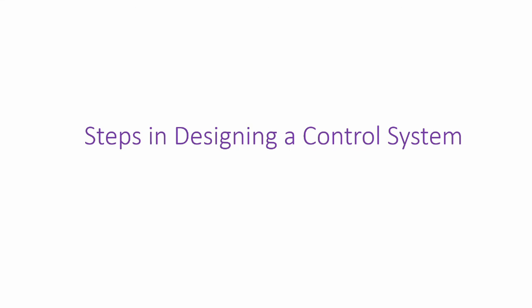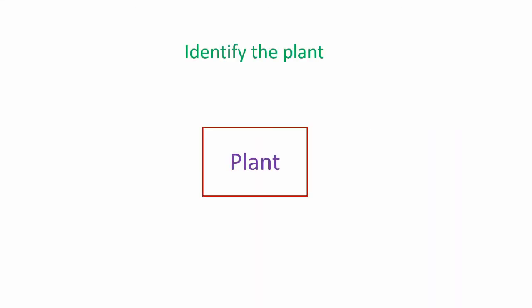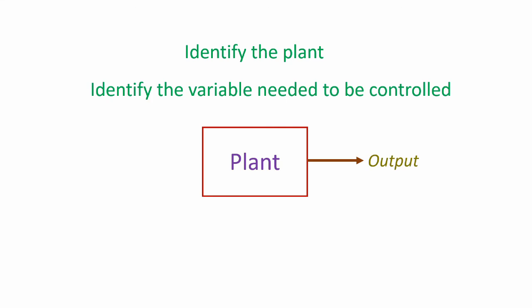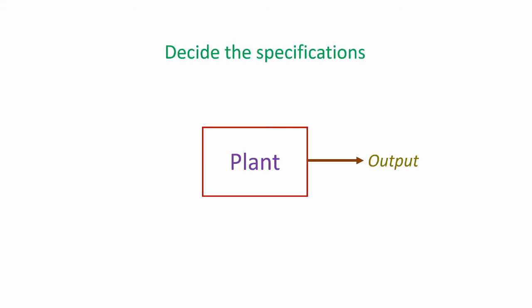Steps in designing a control system: First, we have to identify the plant — the system which needs to be controlled. Then we have to identify the variable that needs to be controlled, which will be the output of the plant — for example, room temperature or brightness in the room. Then we have to decide upon the specifications of the variable to be controlled. For example, in the case of an air conditioner, we may not be able to maintain the temperature at a particular point, so we define a range — perhaps plus or minus 1 degree Celsius around 25 degrees Celsius.